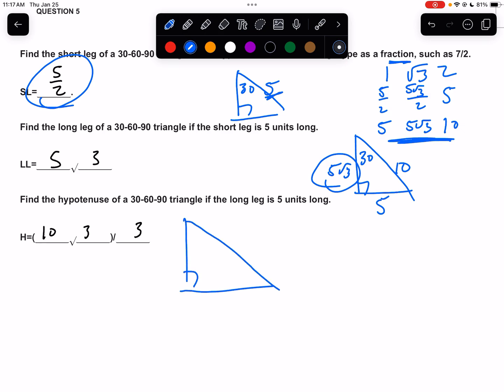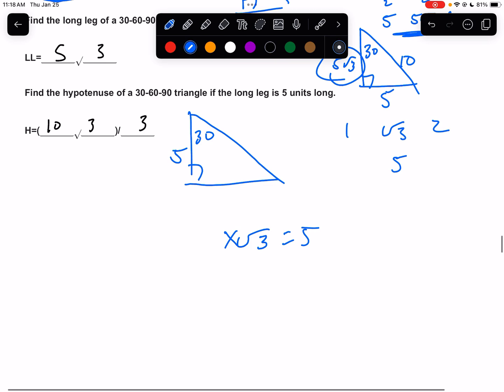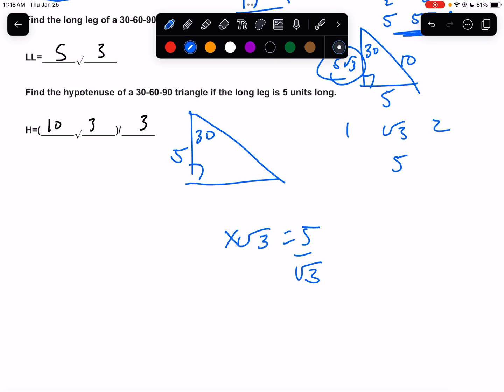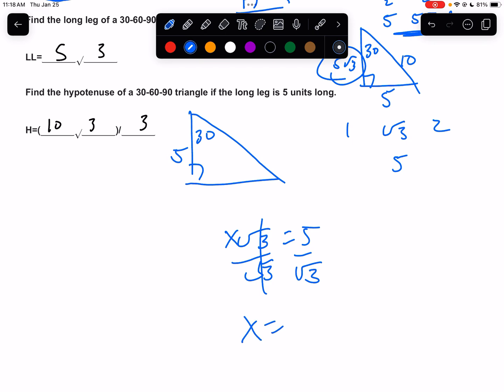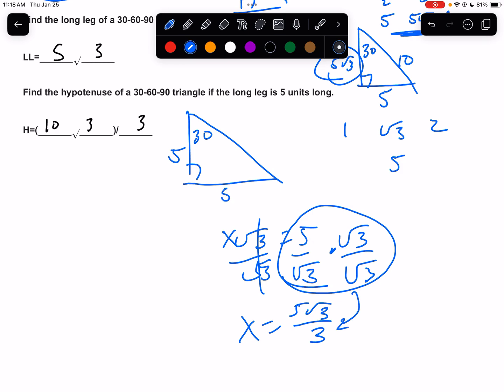And then another 30-60-90. It says the long leg is 5. So again, 1 root 3, 2. The long leg is 5. We do, basically we're saying something times root 3 equals 5. You can think about it like that. But you're going to have to divide by the square root of 3. Well, what does that look like? Remember, you multiply by root 3 over root 3, and you get 5 root 3 over 3. My hope is that you don't actually have to do all this on paper, that you can do all that in your head and realize that that's 5 root 3 over 3. So that's the short leg. Double that times 2, and you get 10 root 3 over 3. And that's what they're looking for, the hypotenuse.